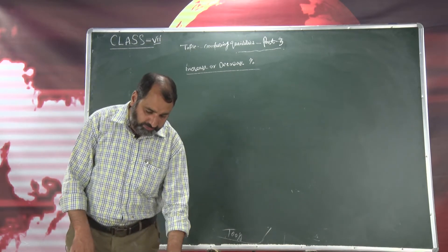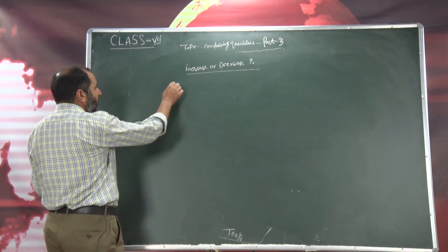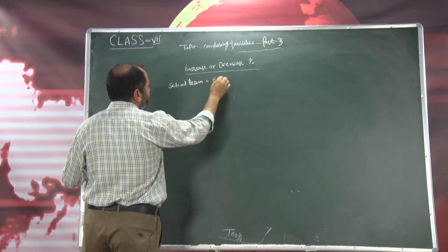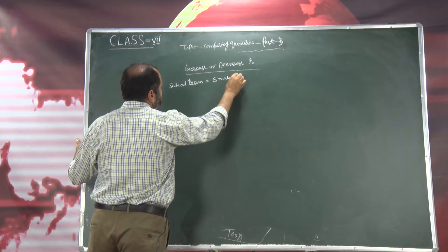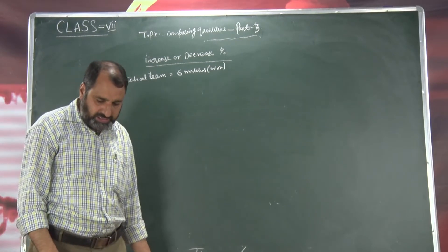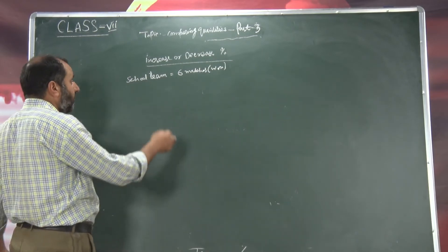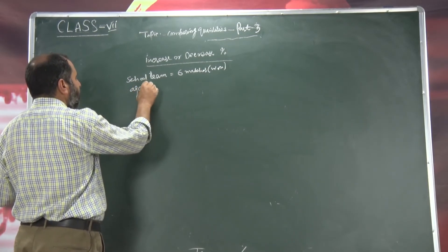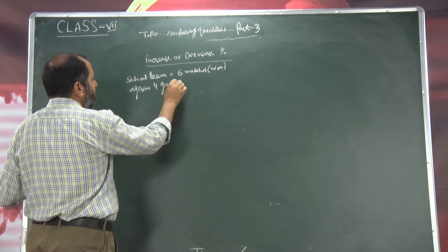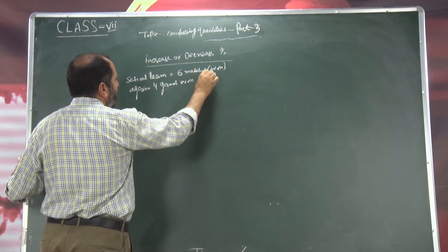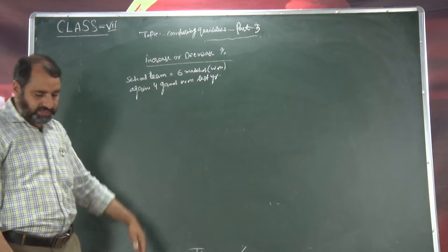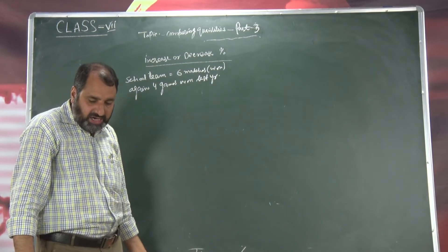For example, school team mein hum matches khilti hai. School ki team hai — is saal school ki team ne six matches jeet liye hai. School team won this year six matches. Against last year mein, four games won. Last year mein school team ne four matches jeet liye the, aur is saal school team ne six matches jeet liye hain. Ab hum dekhingi ki increase percentage kya hai ya decrease percentage kya hai.